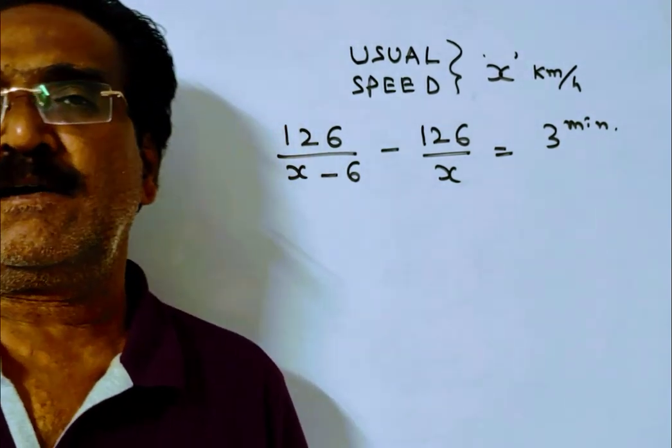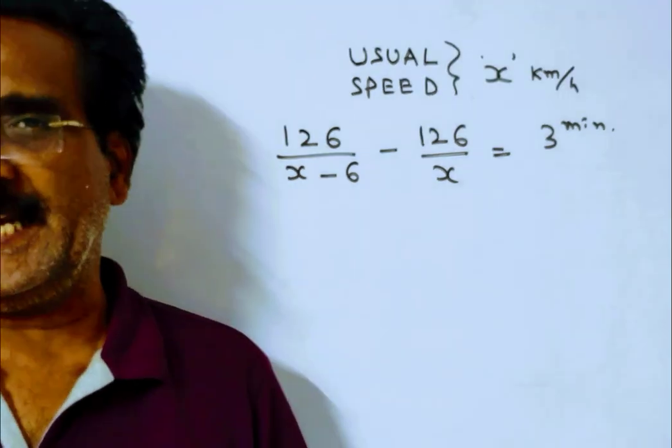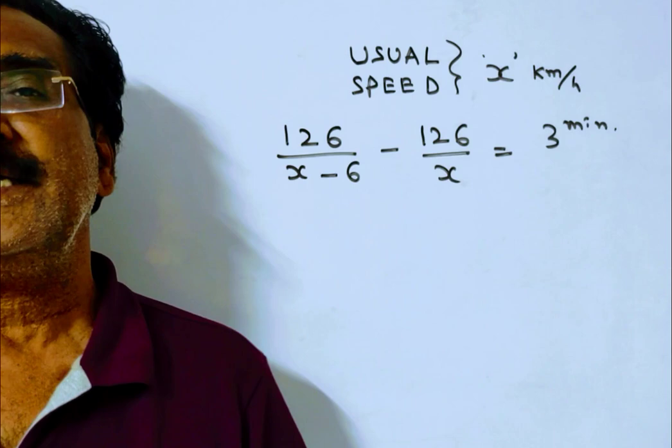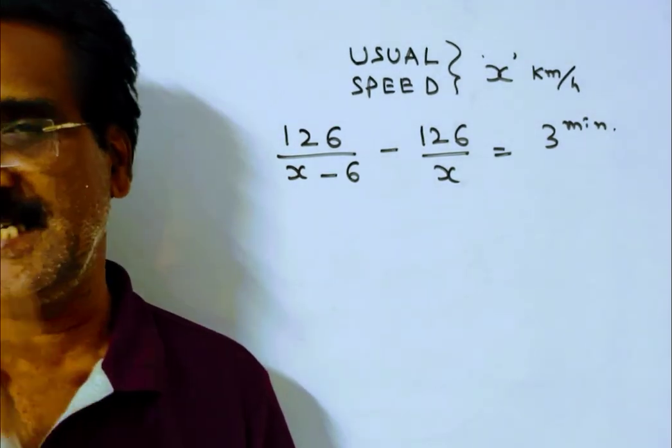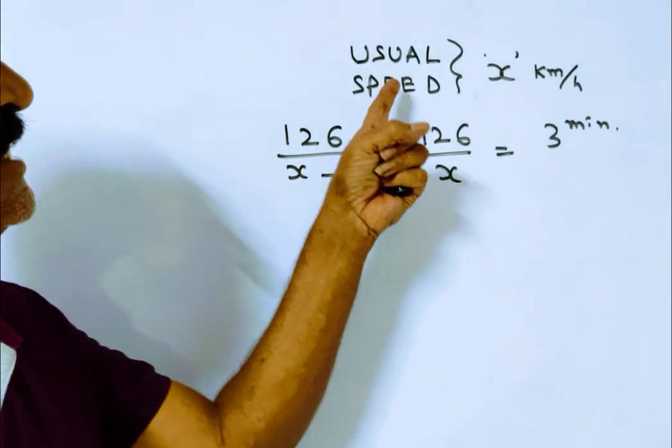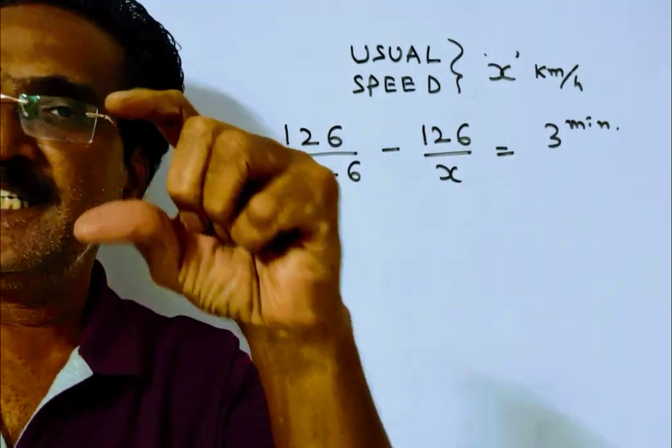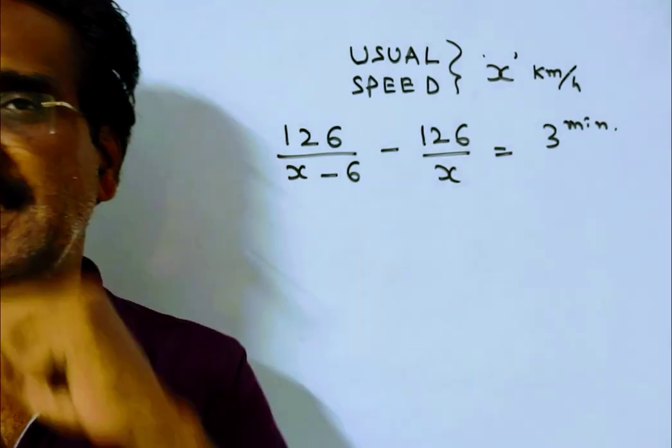Here a car left 3 minutes early and to reach the destination as scheduled, it has to slow down its speed by 6 km/h. Say usual speed x km/h. Here the distance is 126 kilometers.